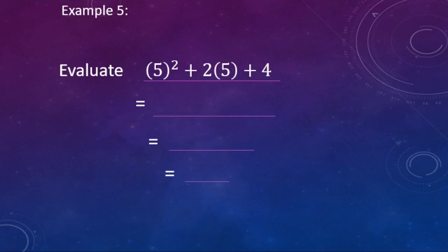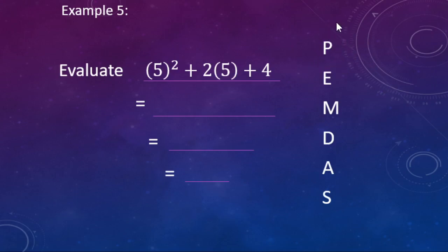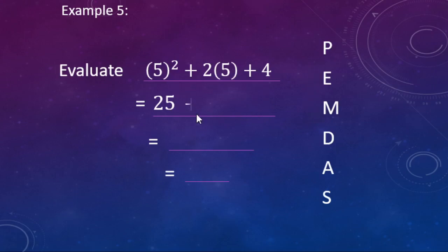The last example involves order of operations — parentheses, exponents, multiplication, division, addition, subtraction. The parentheses in this expression indicate multiplication, not grouping. Starting with exponents: five to the second power is two fives multiplied, so five times five equals twenty-five. Next, multiplication: two times five equals ten. Now we have twenty-five plus ten plus four remaining.